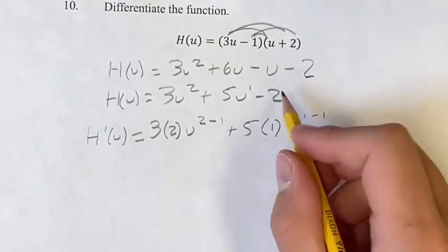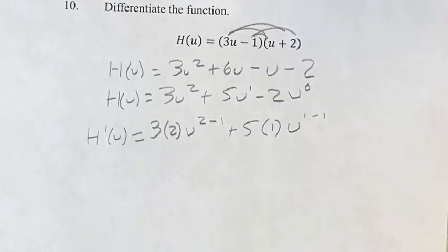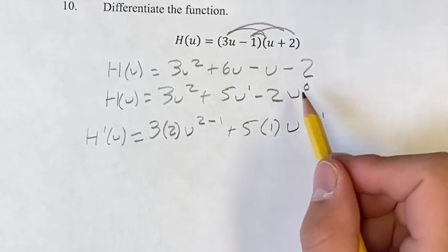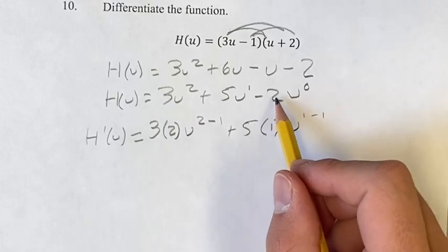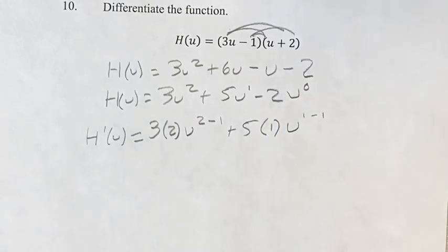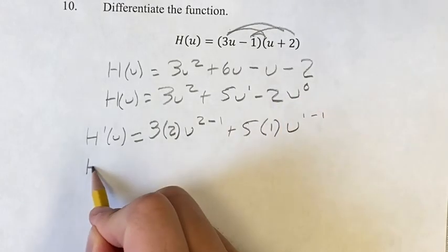You can think of negative 2 as negative 2 times u to the 0, but this doesn't really matter. Bringing the 0 down would mean we'd be multiplying by 0, so this whole term would turn into 0. So we can just leave it out and simplify this.